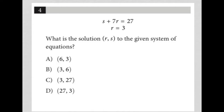This question provides us with a system of equations. We have S plus 7R equals 27. We also have R equals 3. It's not really so much a system of equations because although R equals 3 is technically an equation, it's also just telling us what the R value is.